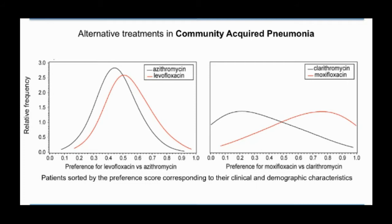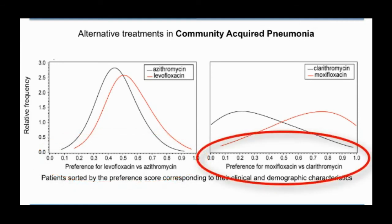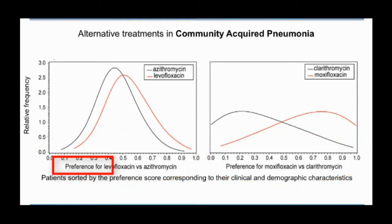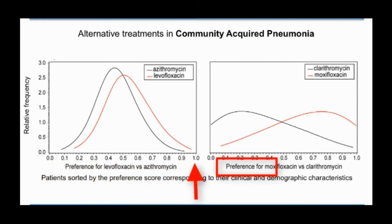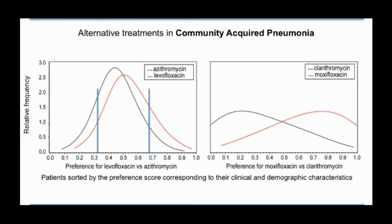These graphs illustrate the technique with community-acquired pneumonia. The x-axis sorts patients according to their probability of getting the treatment shown in red — this is called a preference score — and depicts how many patients there are at each preference score level. The two lines in each graph represent the patient preference scores for the two treatments examined. The left-hand graph compares the use of levofloxacin and azithromycin at different preference scores. At the midpoint of preference, we have patients for whom the treating community is in perfect equipoise. Out to either side, we can sketch down some relative equipoise, say a two-to-one odds of getting one treatment or the other.